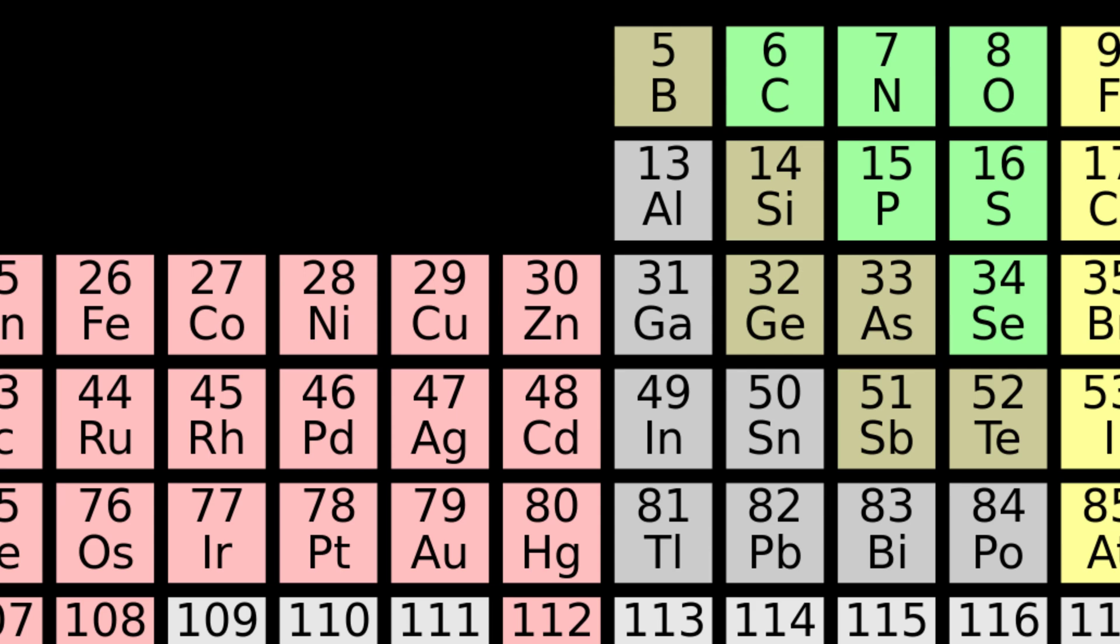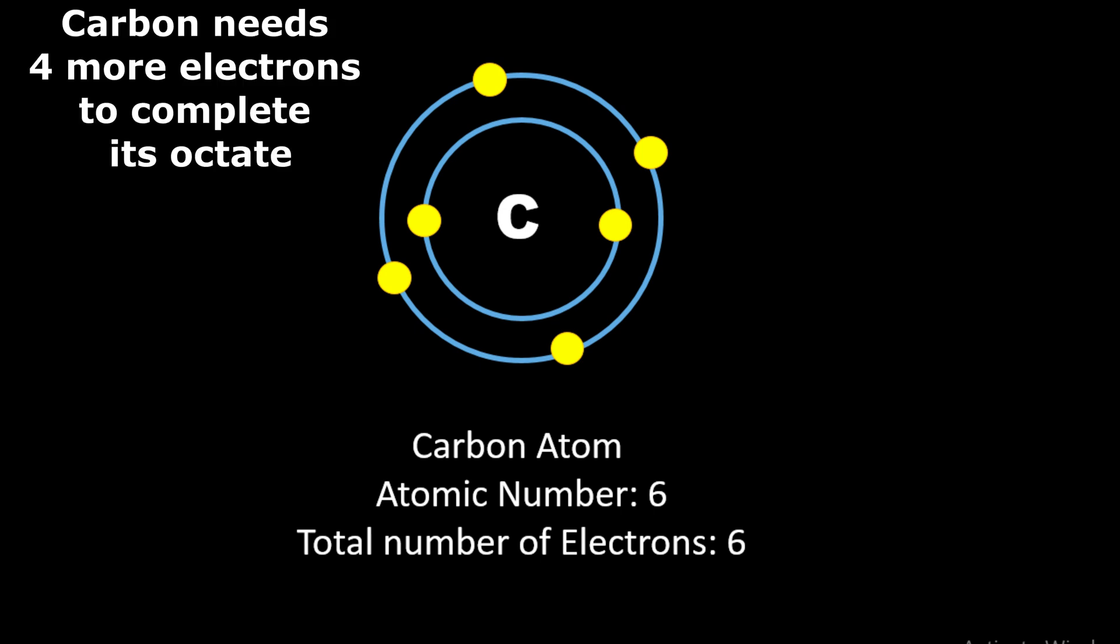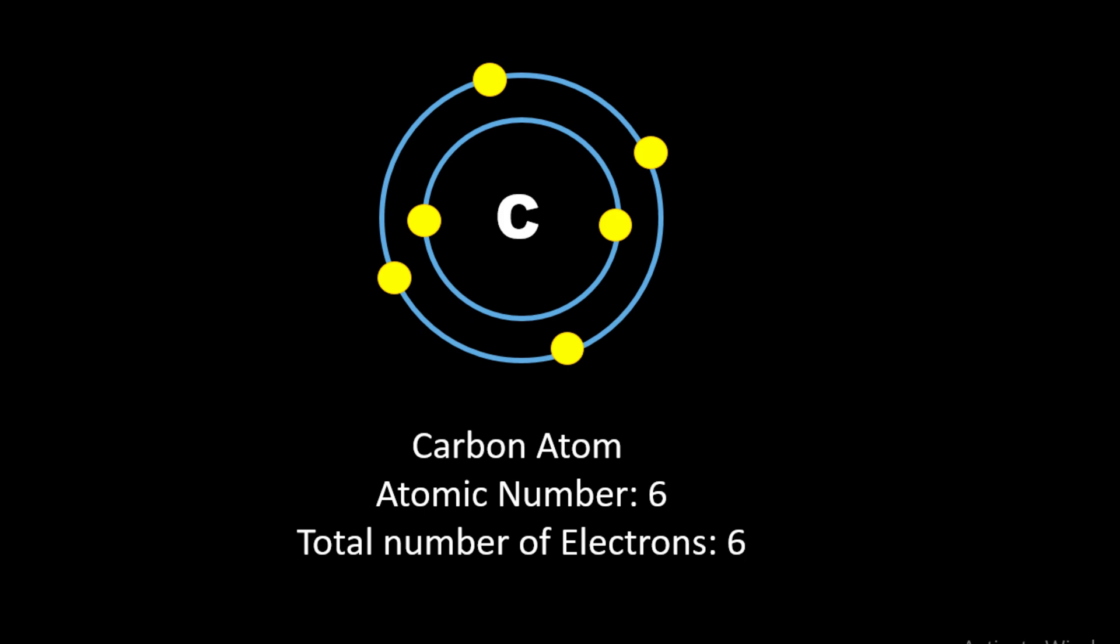Let's talk about carbon atom. Atomic number of carbon is 6, as it has 6 number of electrons. Out of these 6 electrons, 2 electrons are present in the first shell and 4 electrons are in the second shell of the carbon atom. Therefore, it needs 4 more electrons to fill its outermost shell completely to make it 8 electrons in the valence shell for more stability.